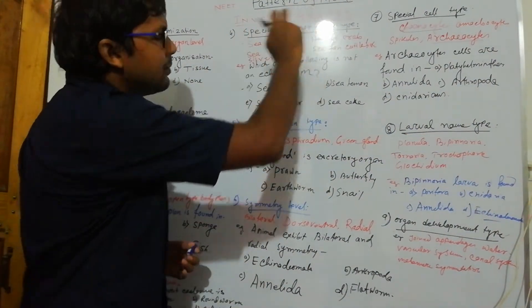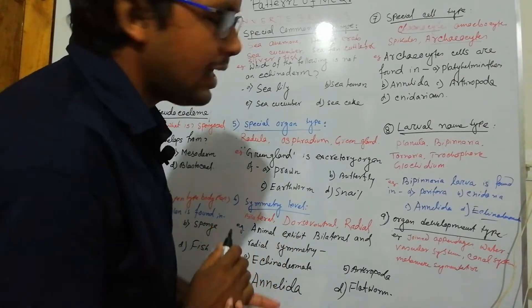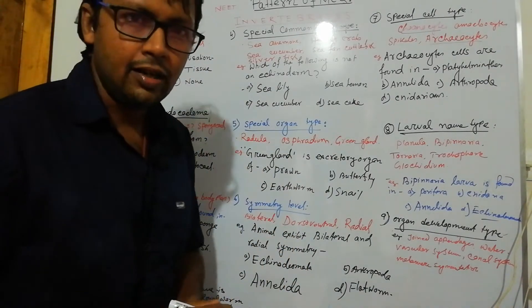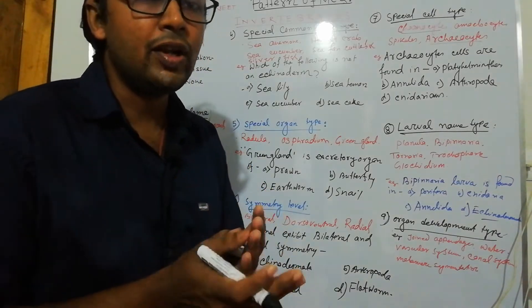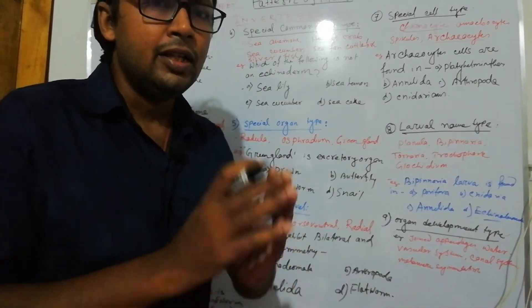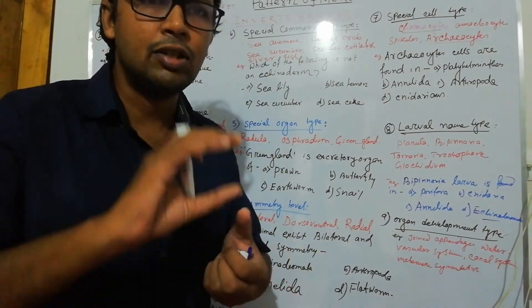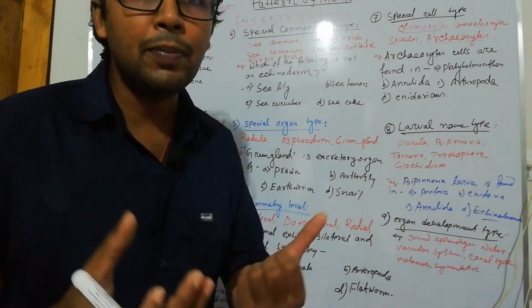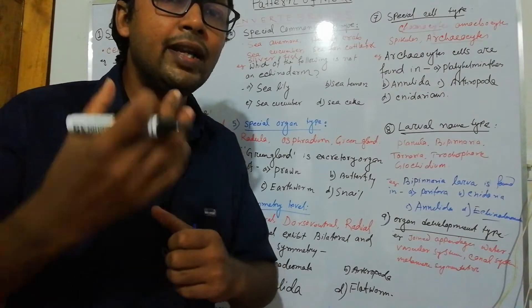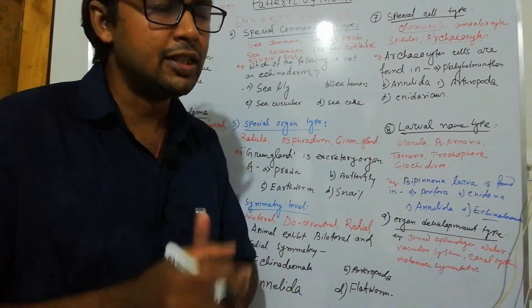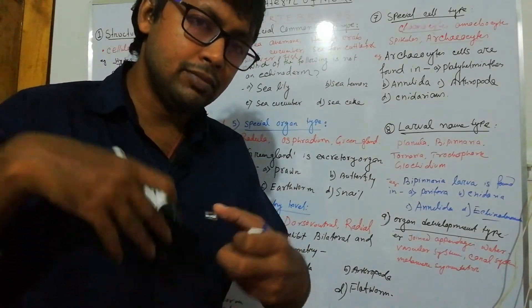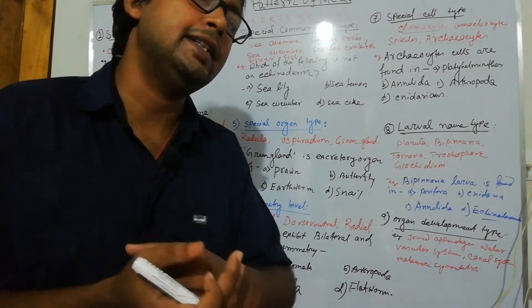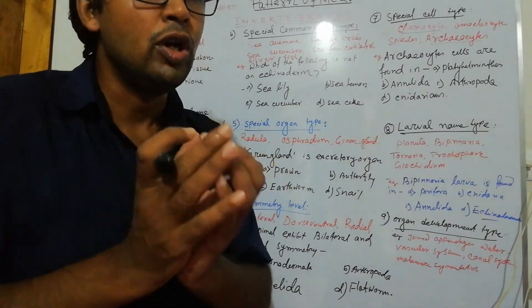For pattern analysis of MCQs of invertebrates, first look at structural organization. In invertebrates — porifera, cnidaria, ctenophora — what type of organization? All these have cellular level of organization, tissue level, or organ level. Is the organ developed or undeveloped? Whether connective tissue is included — it could be cellular level or tissue level, and whether it is a higher tissue level of organization.